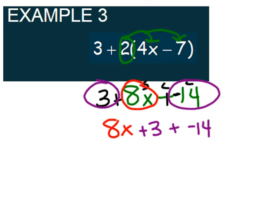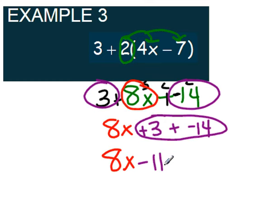Then we can go ahead and combine everything that needs to be combined. In this case I'm just going to bring down my variable. However, I do need to combine my 3 and negative 14 which will give me a negative 11.